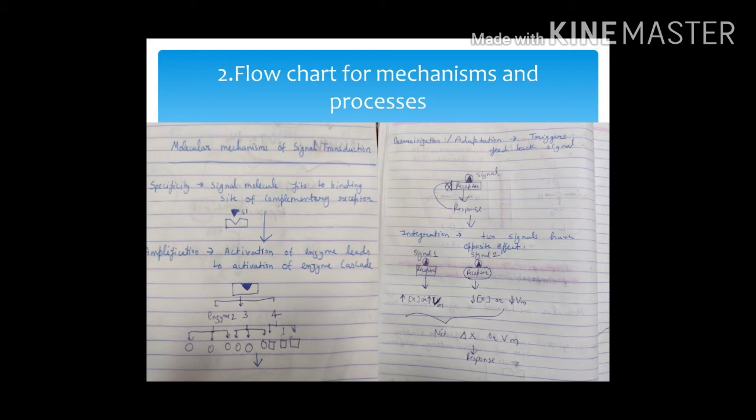Next is flowchart for mechanism and processes. Whatever mechanisms and processes, you need to make flowcharts. You have all the steps of the pathway and you have to make a heading for each step. The diagram also needs to show enzyme specificity. Amplification is also shown, how the enzyme can activate other enzymes.